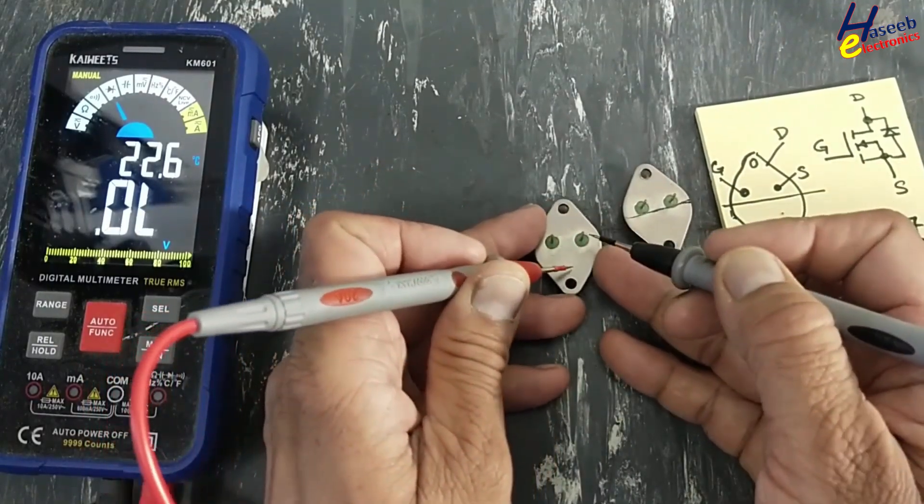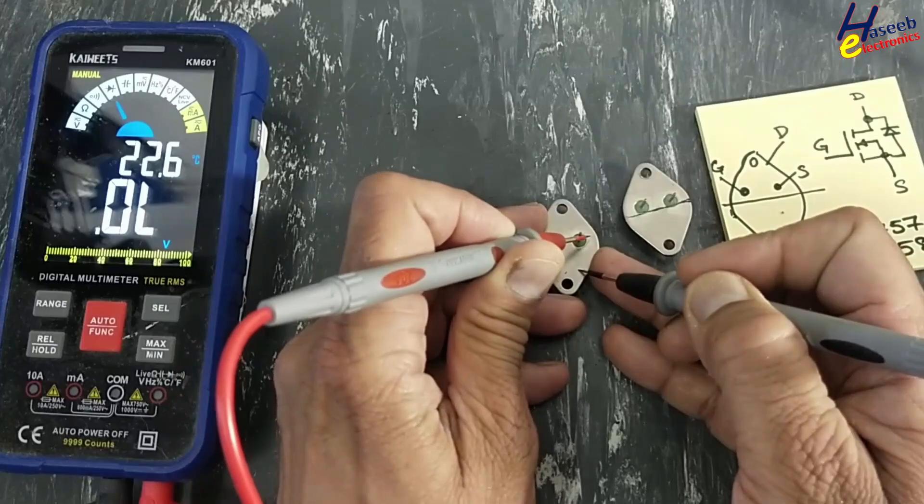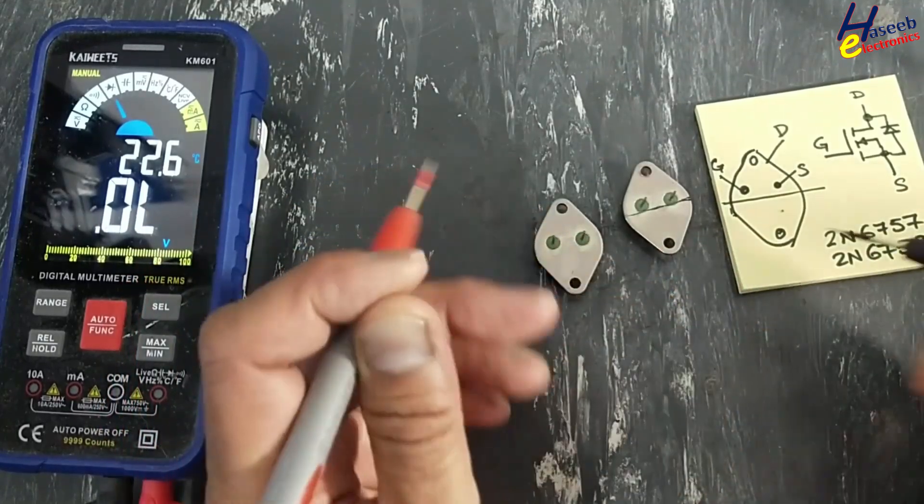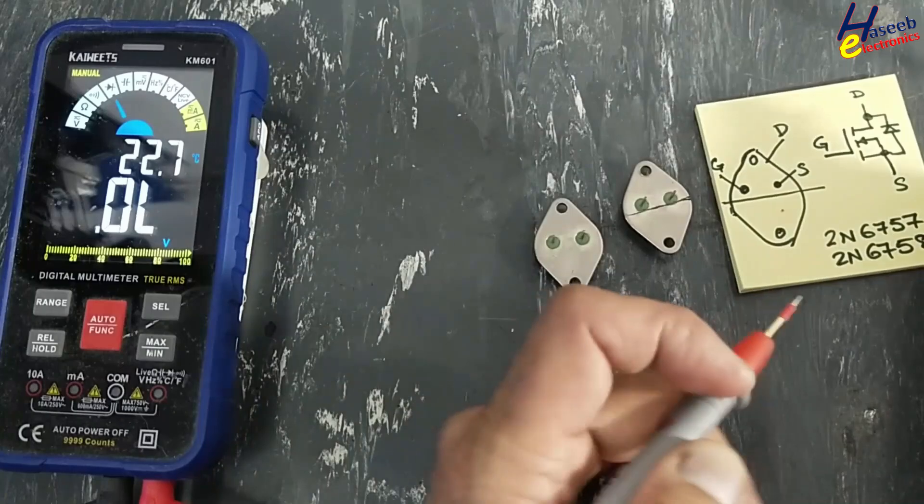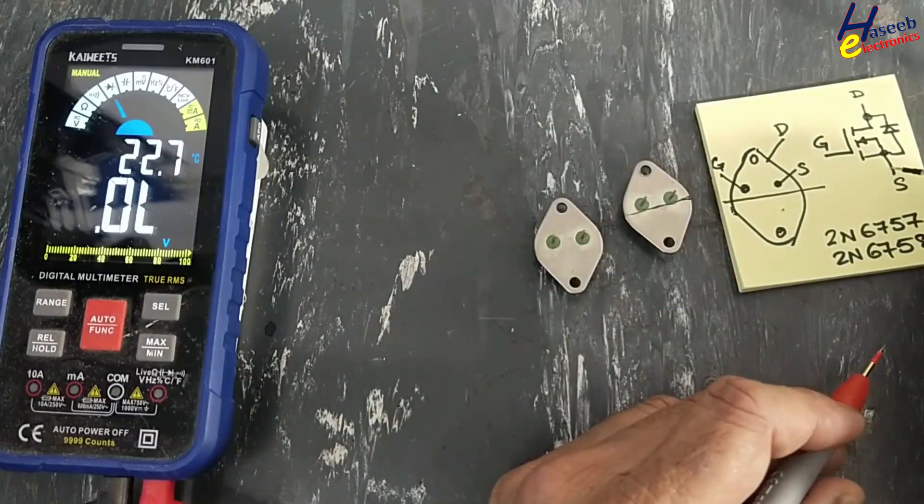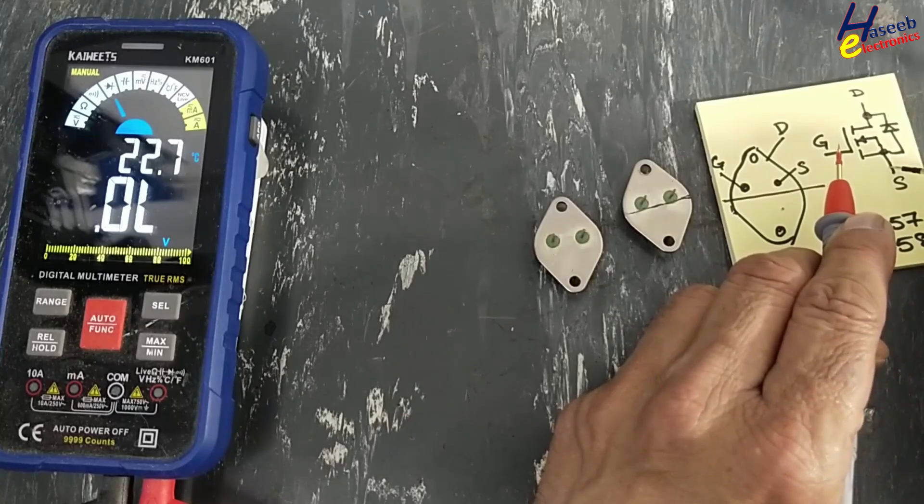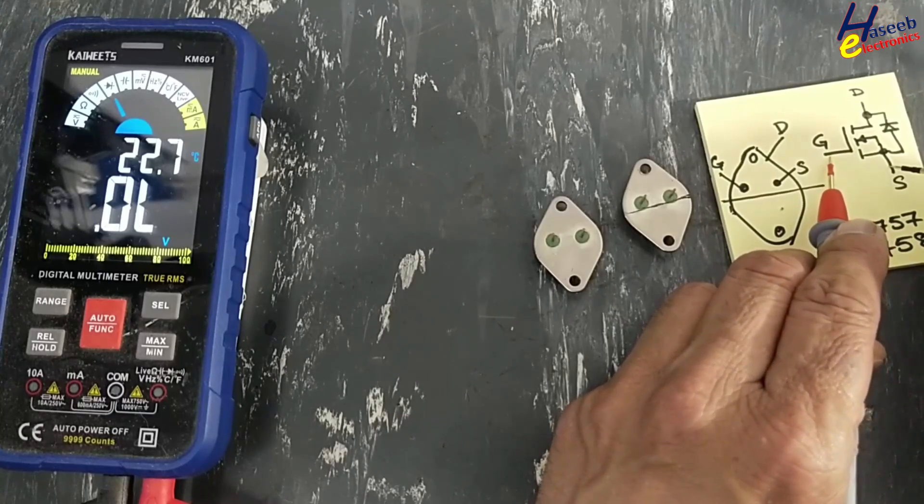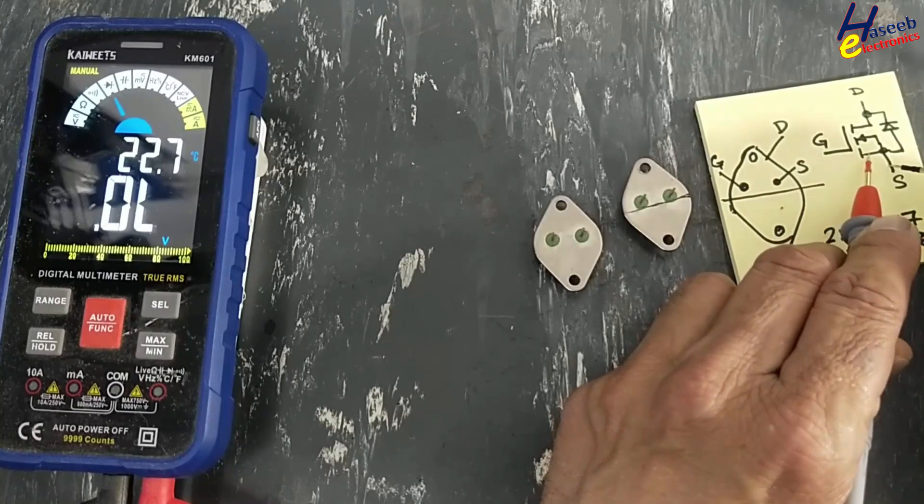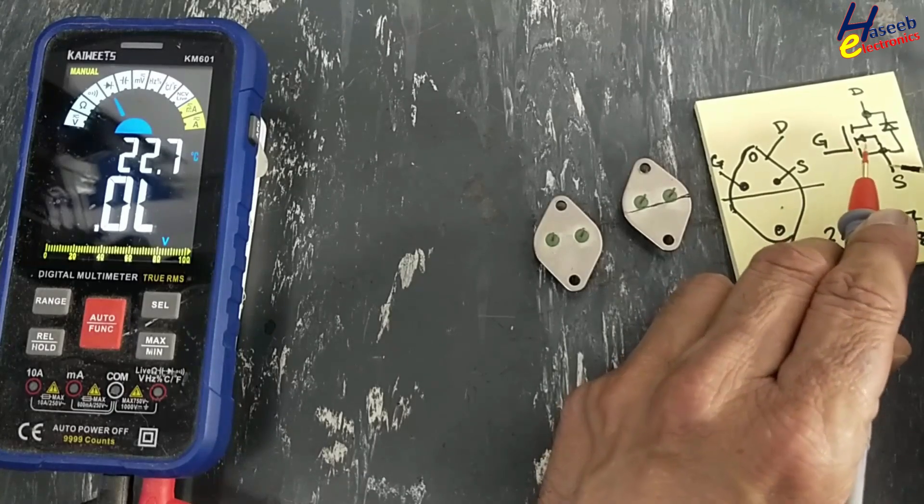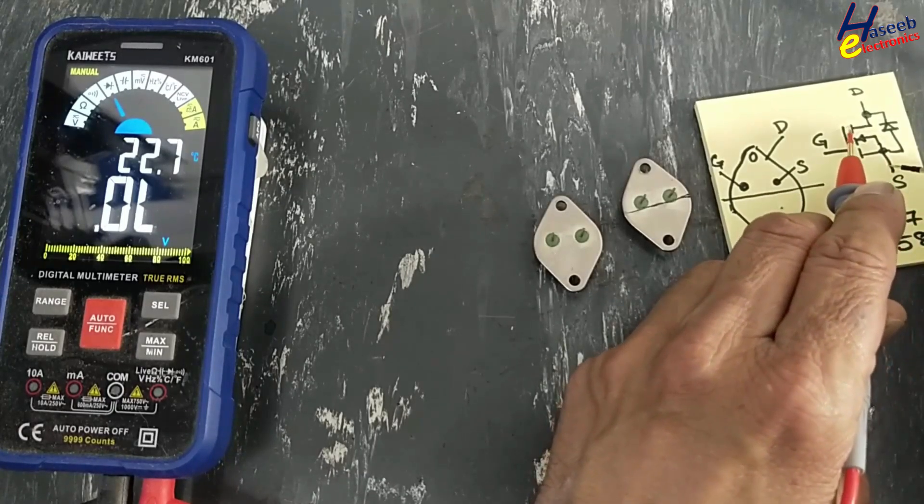This power MOSFET is short circuit between drain and source. Now, since it is N-channel, we will place black lead at source pin, red lead at gate. It will charge the gate, which will allow current from source to drain.